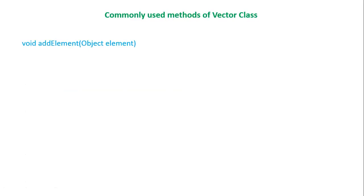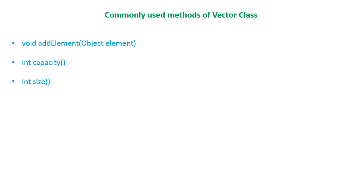These are a few commonly used methods of the Vector class. The first is add element, which inserts the element at the end of the Vector. The second method is capacity, which returns the current capacity of the Vector. The third is size, which returns the current number of elements. Size and capacity are two different things — size tells the number of elements present, while capacity tells how many elements the Vector can store.